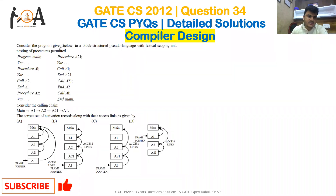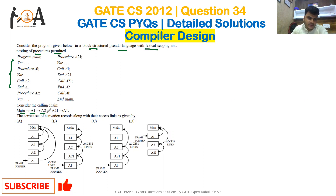Consider the program given below in a block-structured pseudo language with lexical scoping and nesting of procedures permitted. We need to consider the calling chain: main to a1, a1 to a2, a2 to a21, and a21 to a1. The correct set of activation records along with their access links is to be determined.